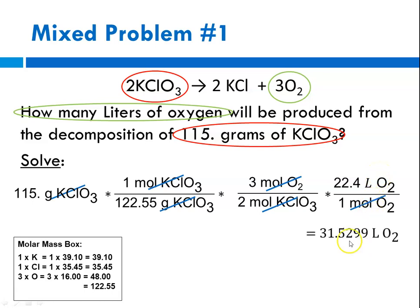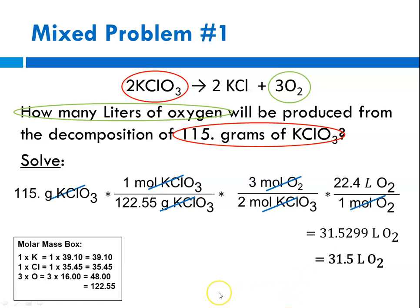Plugging into the calculator: 115 times 1, divided by 122.55, times 3, divided by 2, times 22.4, divided by 1, equals 31.5299. Looking at the problem, we were given three significant digits — that was the only measurement — so we round to three significant digits. The number after the 5 is a 2, so we leave it alone. Our answer is 31.5 liters of oxygen.